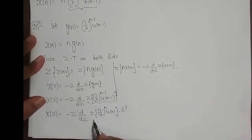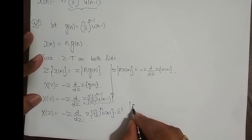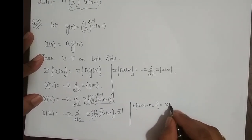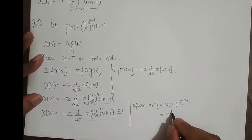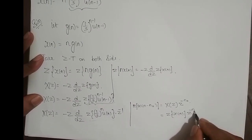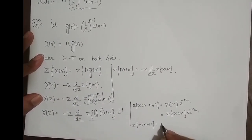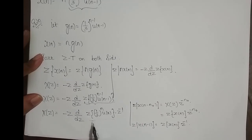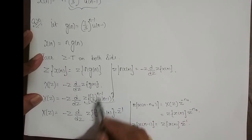I wrote this part using the time-shift property. The Z-transform of x of n minus n-naught is x of z into z power minus n-naught. So Z-transform of x of n minus 1 is Z-transform of x of n into z power minus 1. I can do this only if both the power and the unit step have the same shift — both n minus 1. If u of n minus 1 and 1 by 3 power n had different shifts, I cannot apply this.